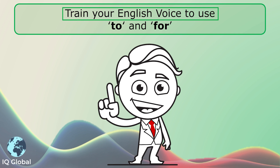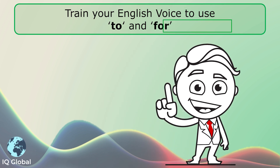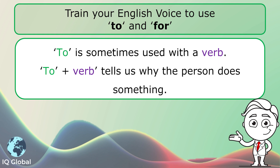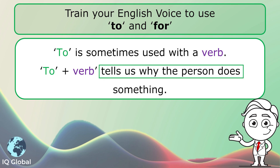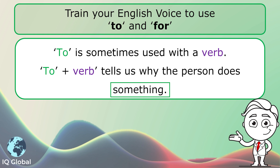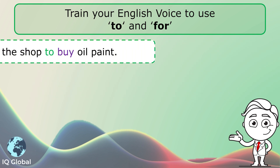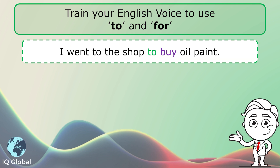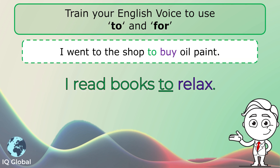Train your English voice to use 'to' and 'for'. 'To' is sometimes used with the verb. The structure is 'to' plus verb, and this tells us why the person does something. For example: I went to the shop to buy oil paint, or I read books to relax.